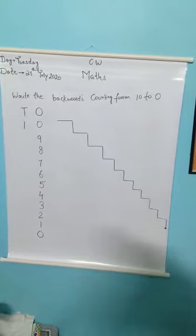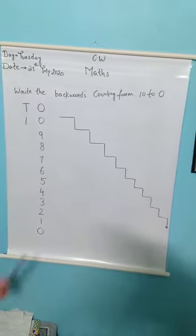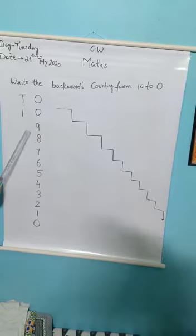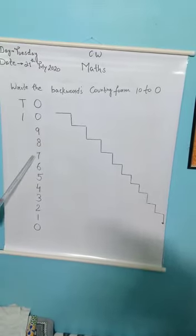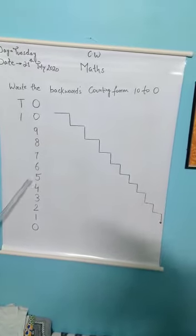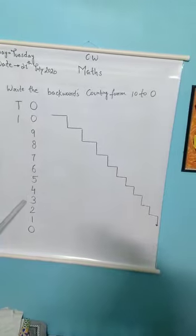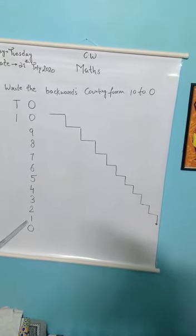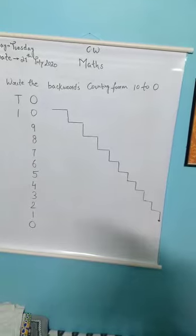Counting means ulti ginti. Now start: 10, 9, 8, 7, 6, 5, 4, 3, 2, 1, 0. This is how...